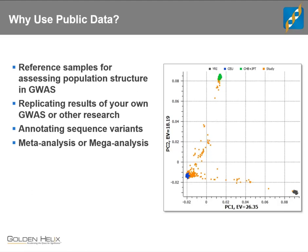Meta-analysis and mega-analysis: quite often, especially if you're working with a common complex disease, there are several datasets in the public domain that can be combined to give greater power for analyzing a particular phenotype. Maybe you have your own GWAS and want to increase your power by combining it with a study from dbGaP, another from EGA, and something else from a collaborator. You get greater statistical power with increased sample sizes, and that is one of the more common uses for public data.